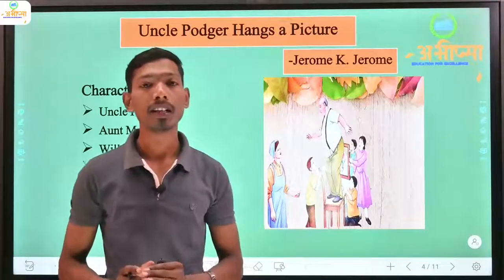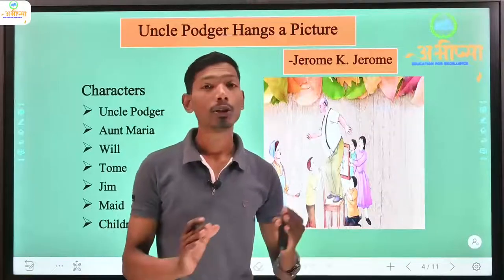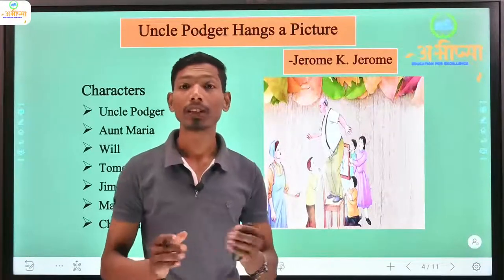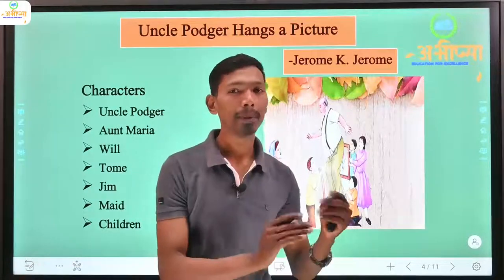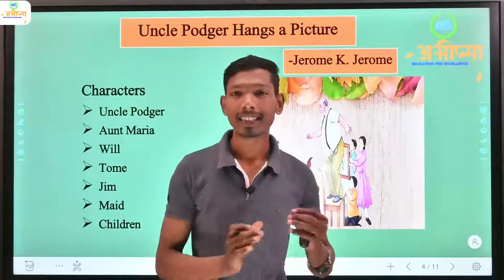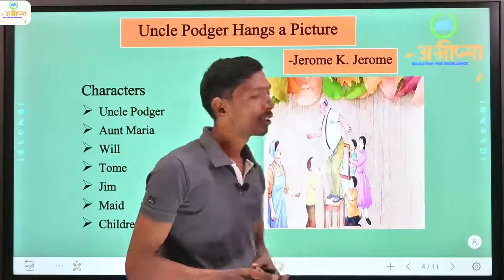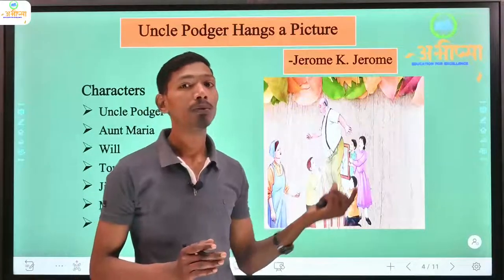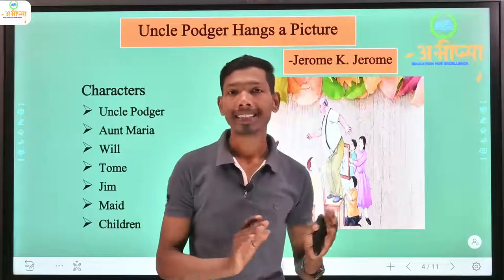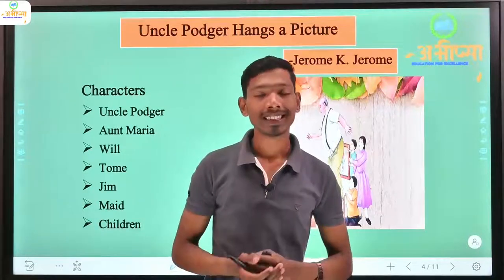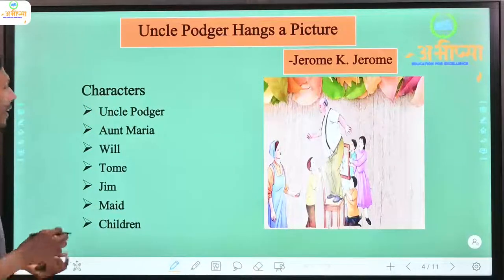Uncle Podger Hangs a Picture is a particular story in which we will see that Uncle Podger and the people of his family cannot do a small job — and that small job is hanging a picture on the wall. This story is written by Jerome K. Jerome and it is taken from 'Three Men in a Boat'.